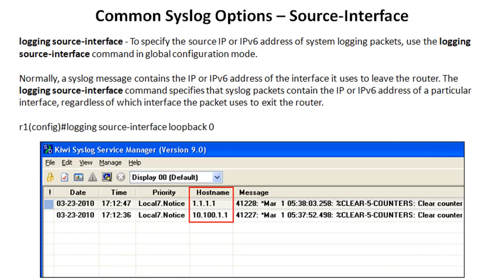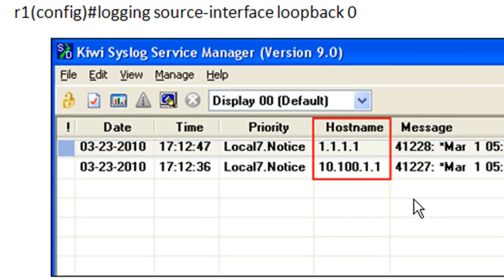Both of these are used to help you differentiate which devices sent which messages on the syslog server itself. By default, your syslog messages are going to be stamped with the IP address of the interface that the router uses to reach the syslog server. In my little lab, I only have one interface — a FastEthernet interface — but you might have multiple exits from your router, and it'll stamp with that.